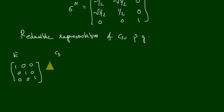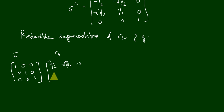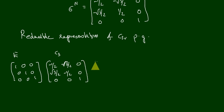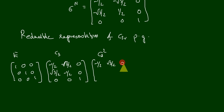C3 is [−1/2, −√3/2, 0; √3/2, −1/2, 0; 0, 0, 1]. C3² is [−1/2, √3/2, 0; −√3/2, −1/2, 0; 0, 0, 1].